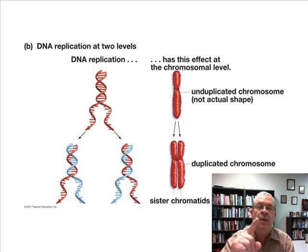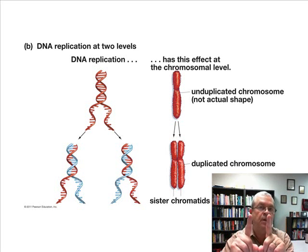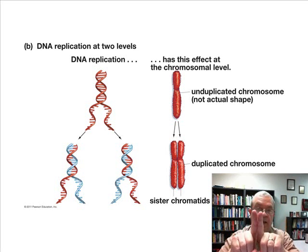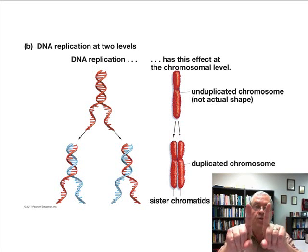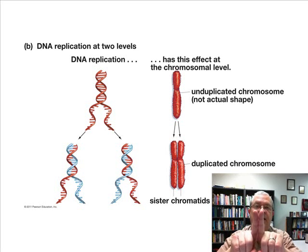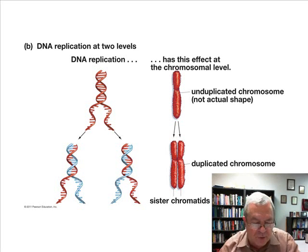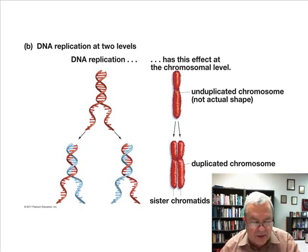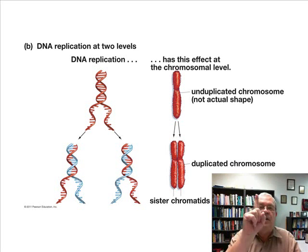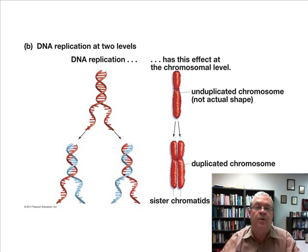At the DNA level, one DNA molecule is becoming two identical DNA molecules — those are the sister chromatids. At the chromosomal level, one unduplicated chromosome is becoming a duplicated chromosome with two identical sister chromatids — those are the two new identical DNA molecules. So when does DNA replication occur during the cell cycle? During interphase. What does DNA replication accomplish? It turns an unduplicated chromosome into a duplicated chromosome with two identical sister chromatids.